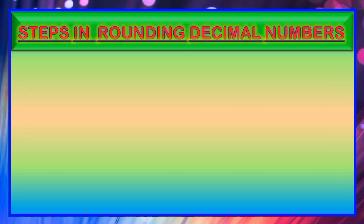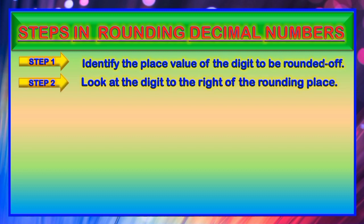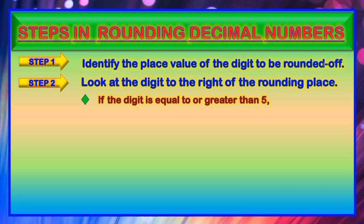Let us familiarize ourselves with the different steps in rounding decimal numbers. Step 1: Identify the place value of the digit to be rounded off. Step 2: Look at the digit to the right of the rounding place. Under this, there will be two conditions. The first condition: if the digit to the right of the rounding place is equal to or greater than 5, we are going to round up.